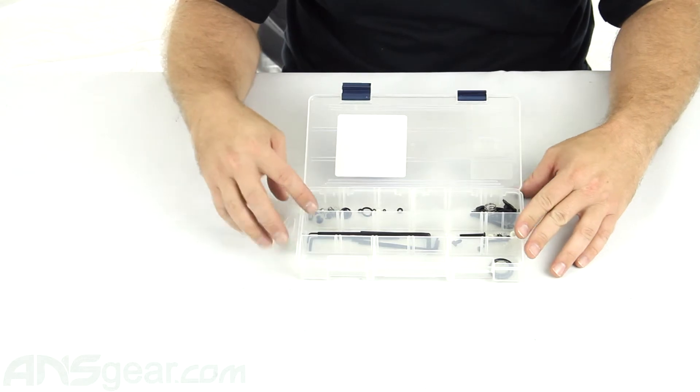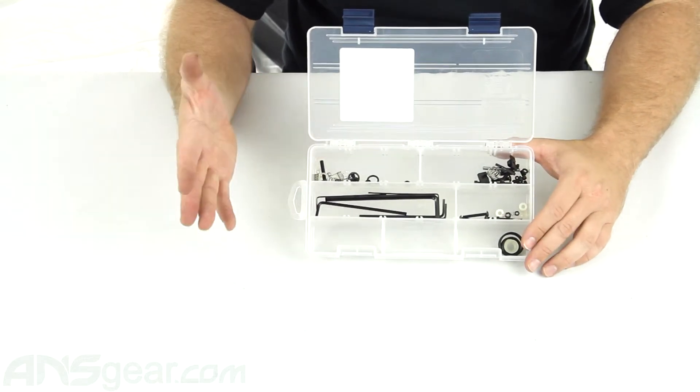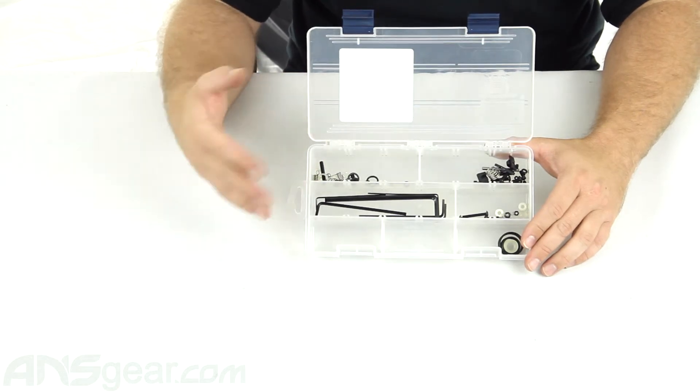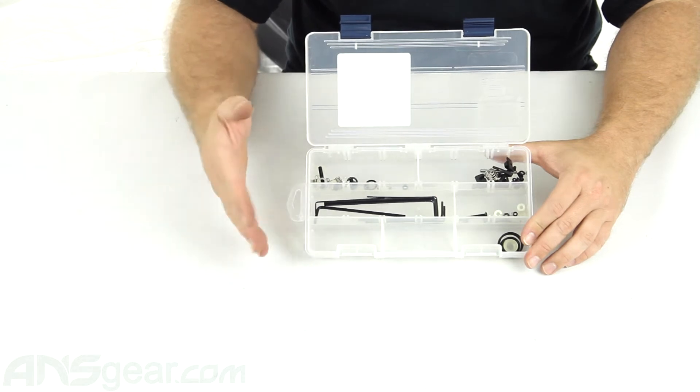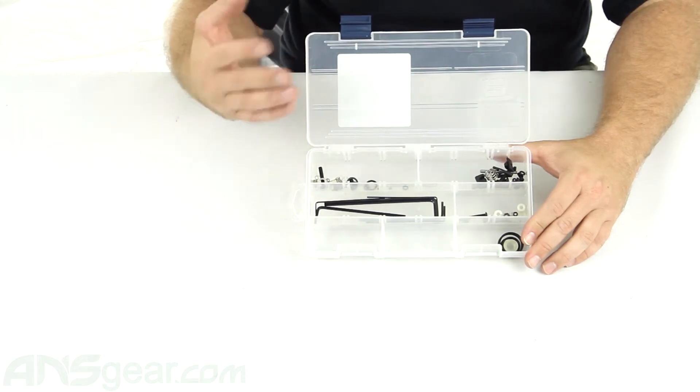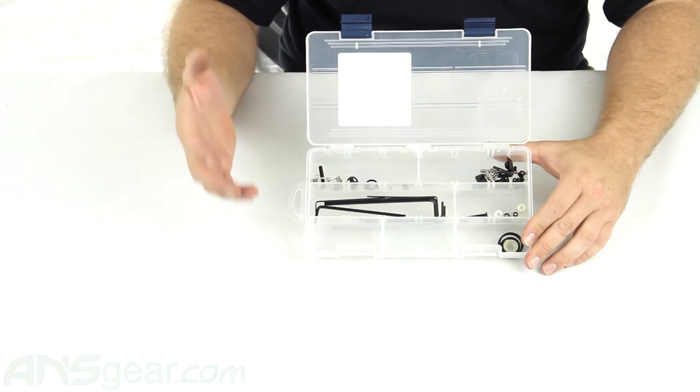This is going to get you parts for most anything that would go wrong, save a few things, but really this should suffice doing rebuilds to your gun. There's a couple of each O-ring, so maybe one or two complete rebuilds or basic rebuilds you could do with this set. If you want to get more in-depth, obviously look at the bigger parts kit.